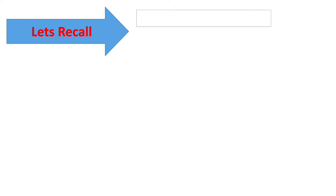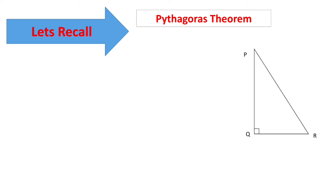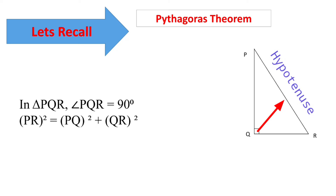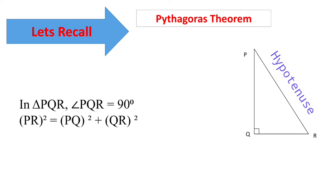Now students, let's recall Pythagoras theorem. Triangle PQR — it is a right angle triangle, angle Q is given 90 degree. Opposite to angle Q there is side PR, that is our hypotenuse. So in triangle PQR, Q is 90 degree. Pythagoras theorem will be: square of hypo equal to sum of the square of other two sides. So our hypo is PR: square of PR equal to PQ squared plus QR squared. This theorem we are going to use in this chapter.